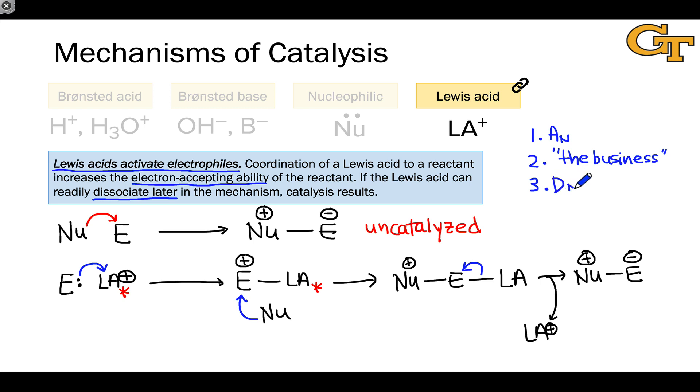The third step is catalyst regeneration, a D_sub_n, the reverse of the first step: decoordination or dissociation of LA+ from the intermediate that results after the business. This general pattern of A_sub_n, the business step, and D_sub_n is typical of Lewis acid catalyzed reactions.